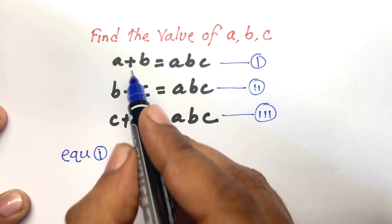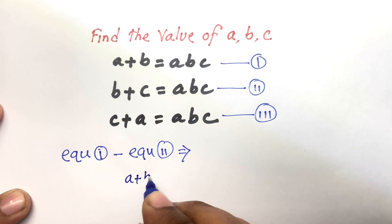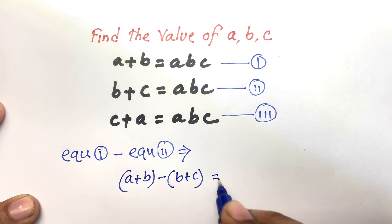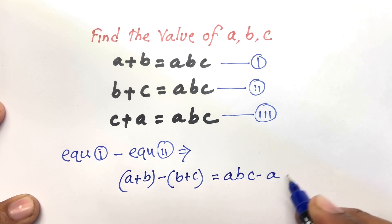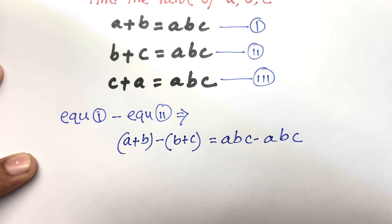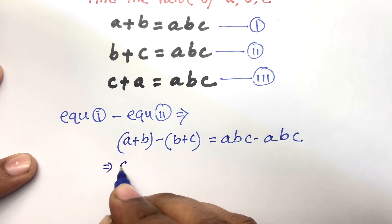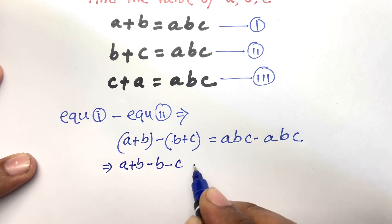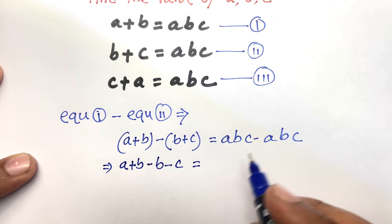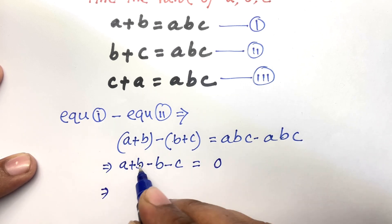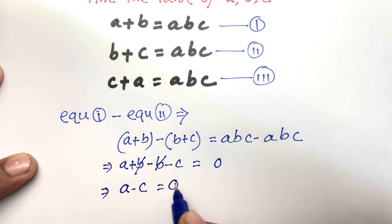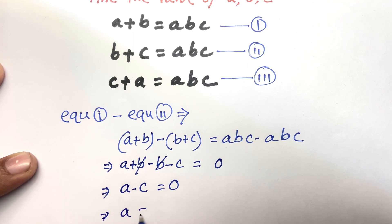I can see easily. The first equation is A plus B, minus B plus C, equals ABC minus ABC. So A plus B minus B minus C equals zero. Minus B and B cancel, so I can say easily A minus C equals zero, therefore A equals C.